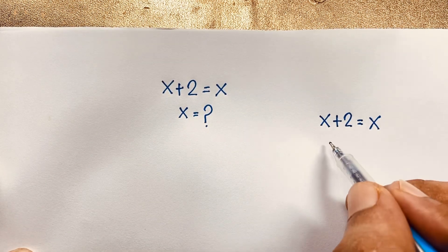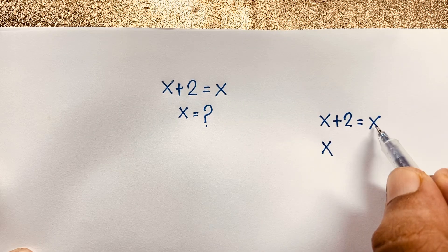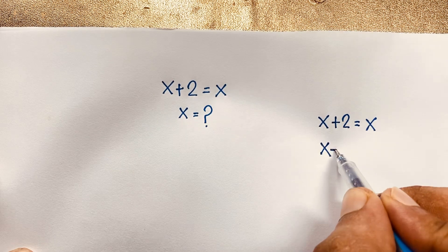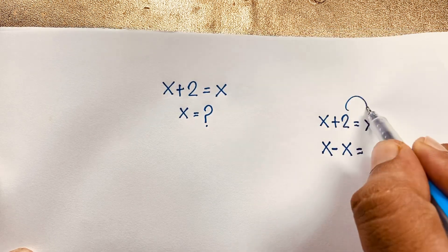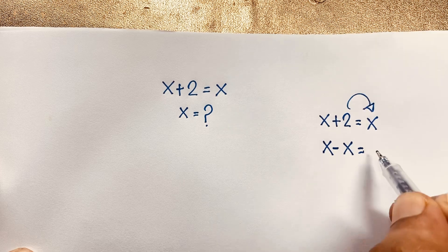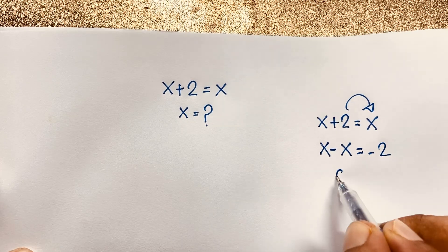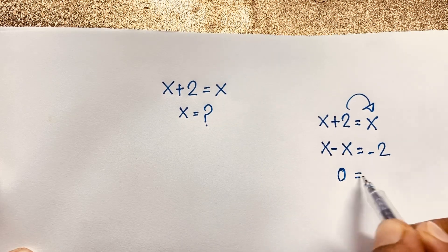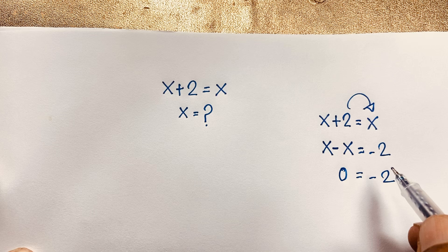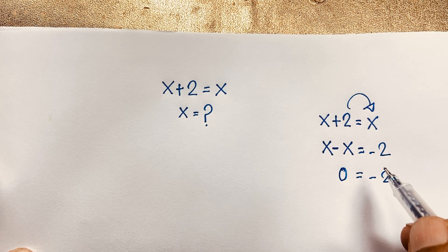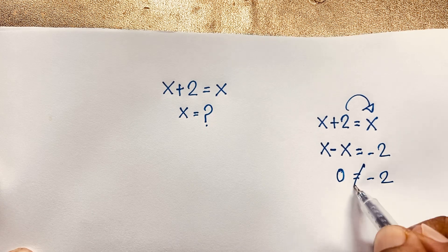You can see here is x, and if I move this x to the other side it will be negative x, and if I move this 2 to the other side it will be negative 2. So it will be 0 is equal to negative 2. So 0 cannot equal negative 2.